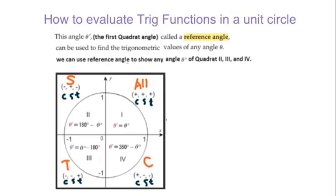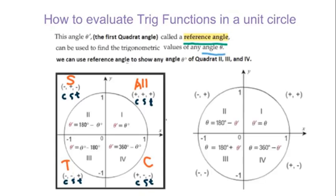This lesson is about how to evaluate trig functions on a unit circle. First, let's talk about reference angle. Reference angle can be used to find trig values for any angle theta. We already went through this last class — using reference angle to show any angle in different quadrants. Today, we will figure out the reference angle if we are given any angle.